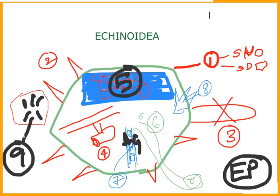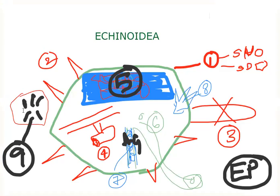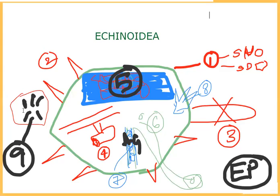Number eight: pedicellariae, three-jawed. Number nine: Aristotle's lantern — five-jawed masticatory structure.